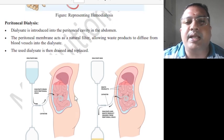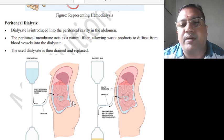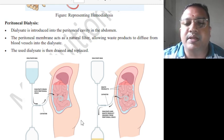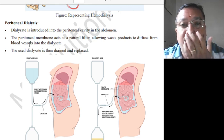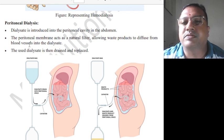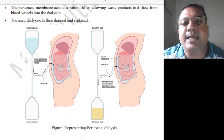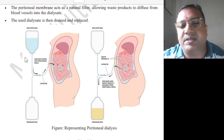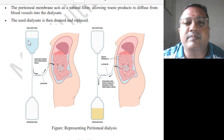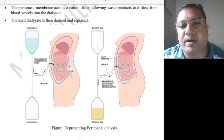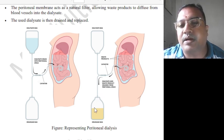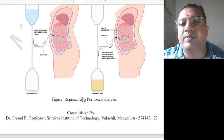Peritoneal dialysis: dialysate is introduced into the peritoneal cavity in the abdomen. The peritoneal membrane acts as a natural filter, allowing waste products to diffuse from blood vessels into the dialysate. The used dialysate is then drained and replaced. The elasticity of the system allows required components to be added and unwanted substances removed when the kidney is not working properly.